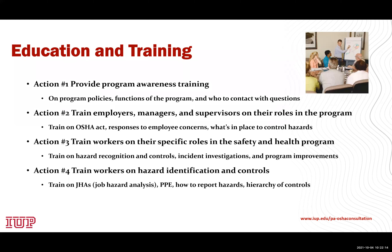Train workers on their specific roles within the safety and health program. They need to be able to identify and recognize hazards and the controls in place. If they are involved in incident investigations, that may be part of their training. Give them knowledge on program goals and how far along the program is in completing those goals. Train workers on hazard identification and controls — if you have job hazard analyses in place, review these with employees so they are knowledgeable about them, and ensure they know what personal protective equipment is needed, how to report hazards, and about the hierarchy of controls.